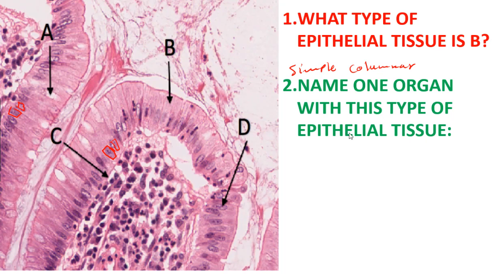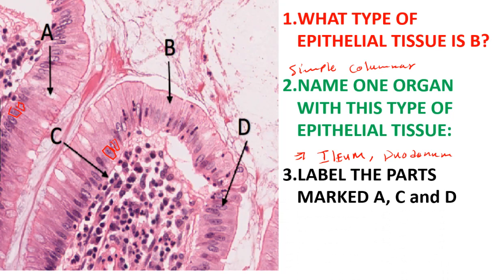Our answer is the ileum. The ileum is one of the organs that has simple columnar epithelium. You can also talk about the duodenum, which is another organ with this type of epithelium. The next question asks us to label the parts marked A, C, and D.